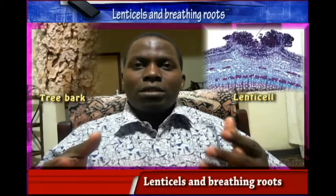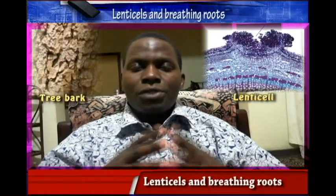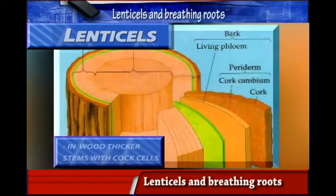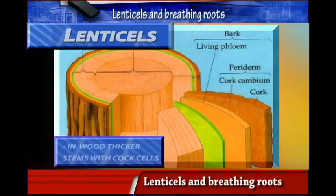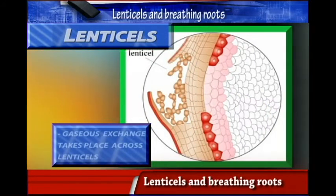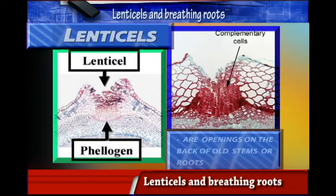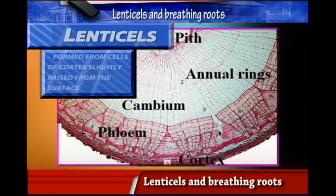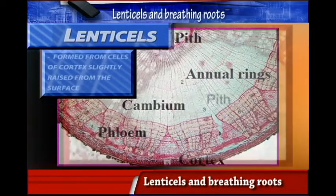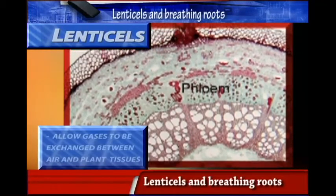We want to look at the importance of lenticels and breathing roots in relationship to gaseous exchange in plants. Lenticels are found in woody structures. Gaseous exchange takes place across the lenticels. These are openings on the bark of old stems and roots, formed from cells of the cortex slightly raised from the surface, and they allow gases to be exchanged between air and the inner tissues of a plant.